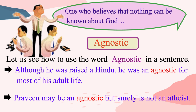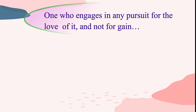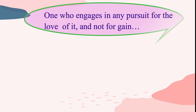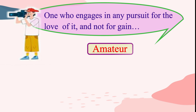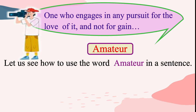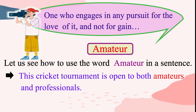Now, let us see the next group of words. One who engages in any pursuit for the love of it and not for gain — instead of saying this full sentence, we can simply say amateur. An amateur is a person who takes part in an activity for pleasure, not as a job. An amateur is also someone who lacks skill in doing something. Now, let us see how to use the word amateur in a sentence. Please repeat these sentences after me. This cricket tournament is open to both amateurs and professionals.